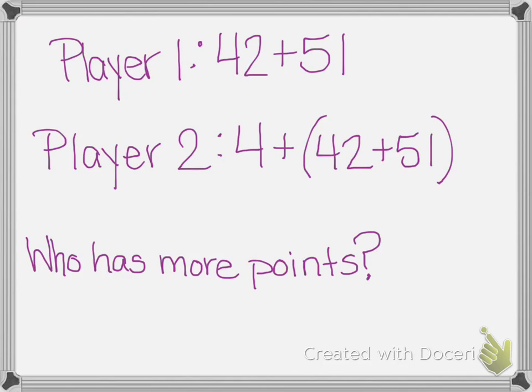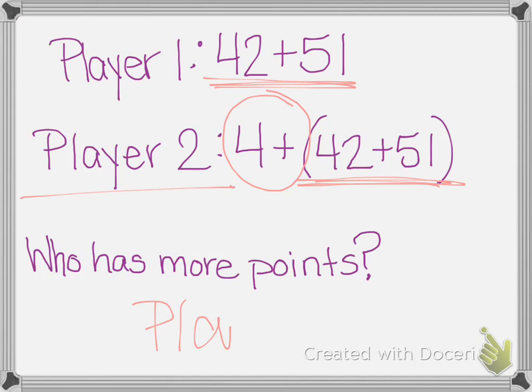Number four says two friends were playing a game and recorded the scores below. So, player one had 42 plus 51. Player two had 4 plus 42 plus 51. So, I want to know who has more points. Just by looking, I have 42 plus 51 here and 42 plus 51 here. I add 4 to that answer. So, right away, I know player two has more points.